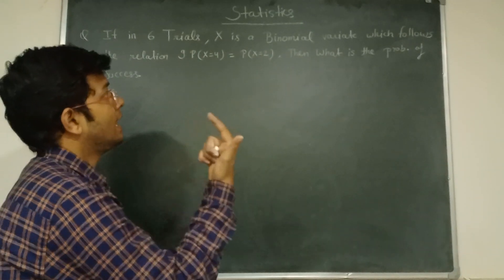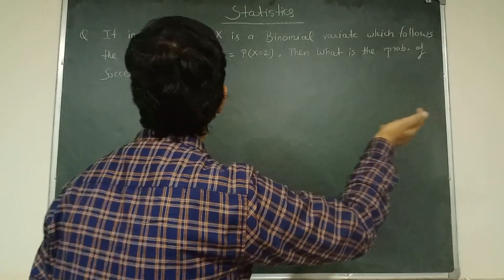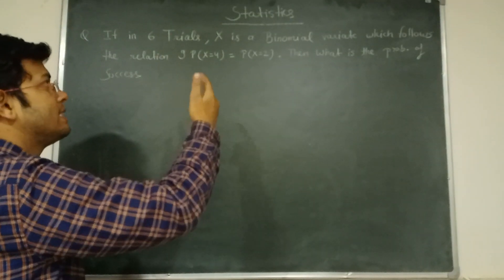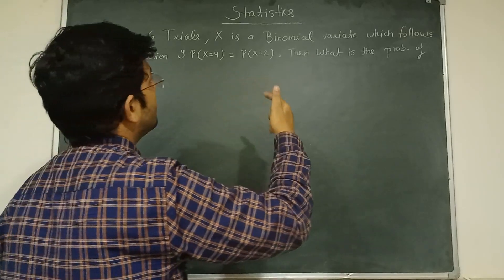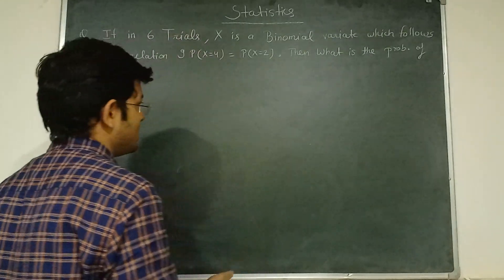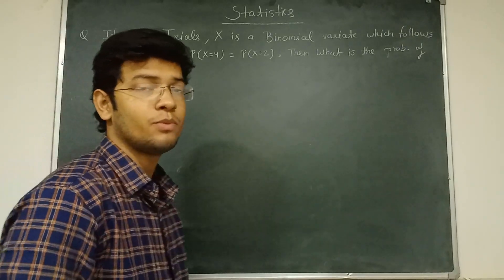If in 6 tries, X is a binomial variable which follows the relation P(X=4) = P(X=2), then what is the probability of success? This is a very simple question.